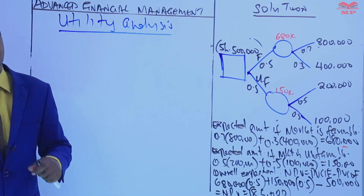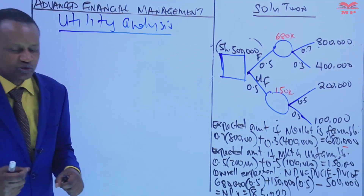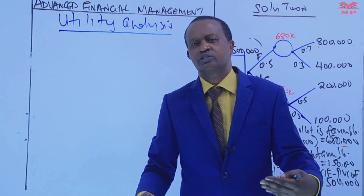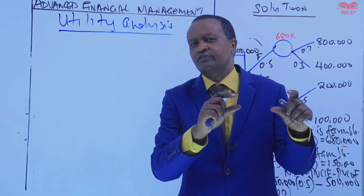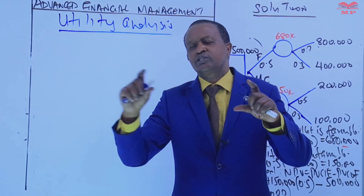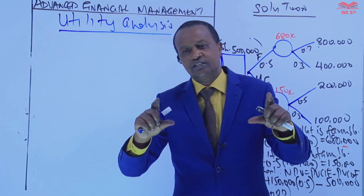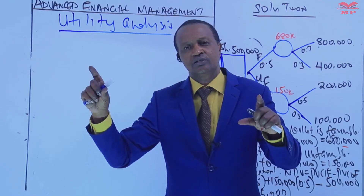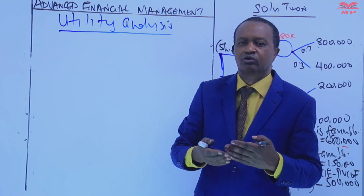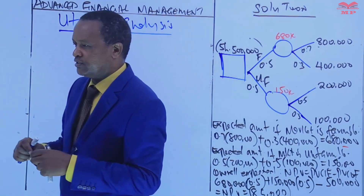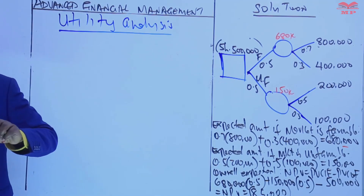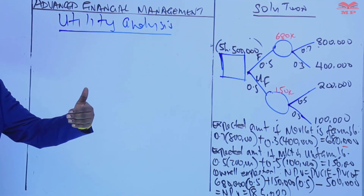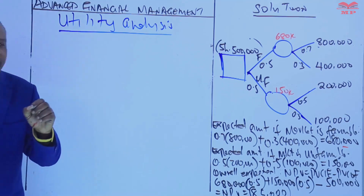In economics, you remember — quantifying the satisfaction of a customer in terms of goods is not easy. When a customer consumes a good, it's not easy to quantify that satisfaction, so we use units called utiles in economics. Here in capital budgeting, utility analysis is used similarly — when weighing or quantifying variables which ordinarily are not easy to represent in monetary terms. It is useful when the outcomes or benefits of an option are difficult to quantify in purely monetary terms.